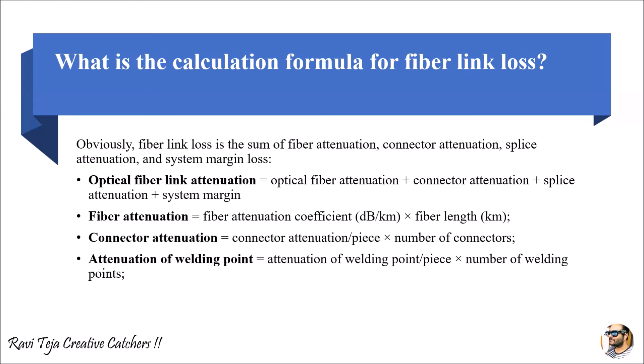Connector attenuation is based on the loss per connector multiplied by the number of connectors used. For example, suppose there is a large optical fiber cable running for hundreds of kilometers with 10 connectors used to join the fiber cables together. If 10% of energy is lost at every connector, then by the time the signal reaches the output, using 10 connectors means all energy could be lost. If only 1% is lost per connector with 10 connectors, then 90% of the signal reaches the output and 10% is attenuated.